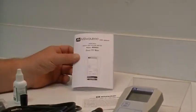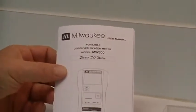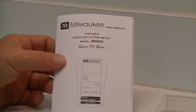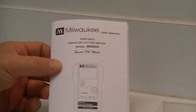Today we're going to do a calibration procedure for the dissolved oxygen meter model number MW600. When you first open up your unit, you're going to find an operator's manual.